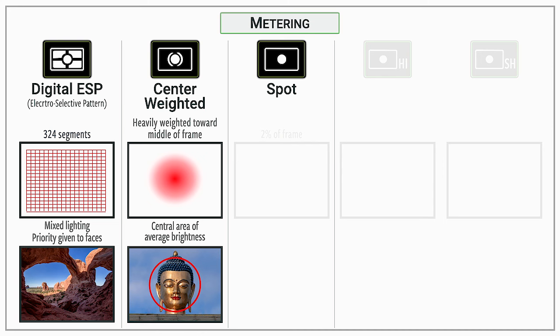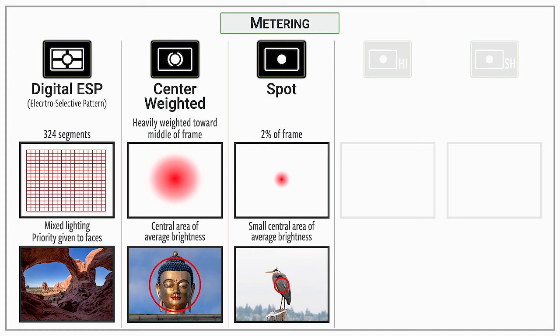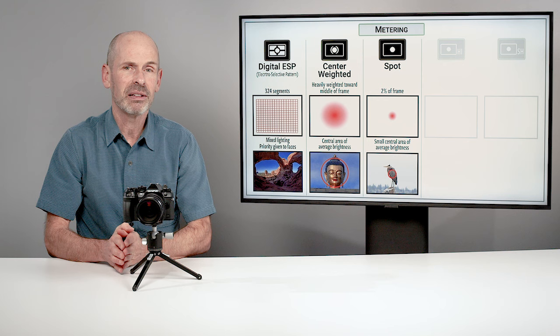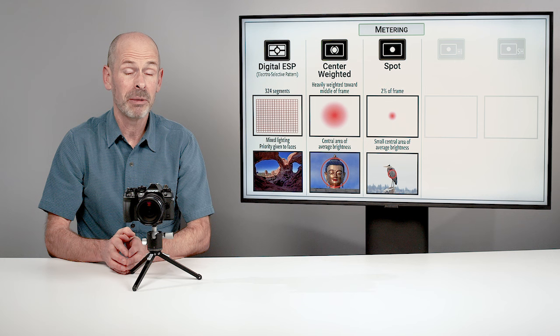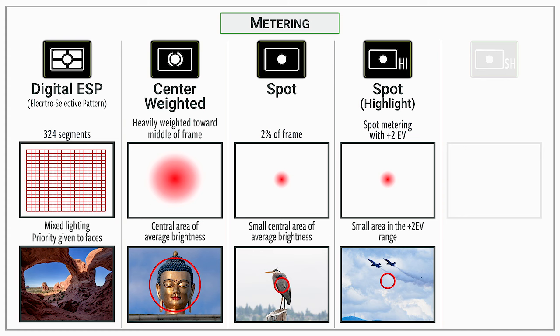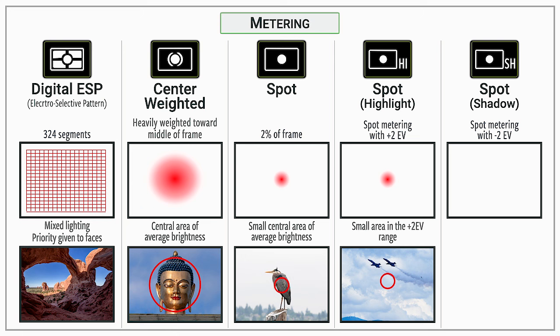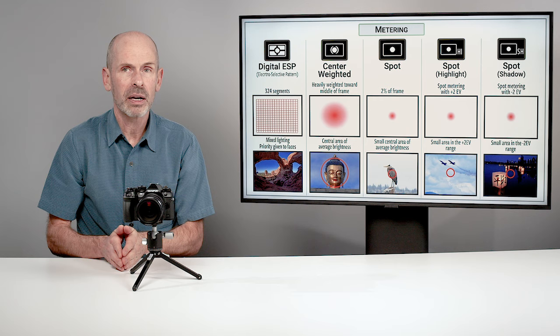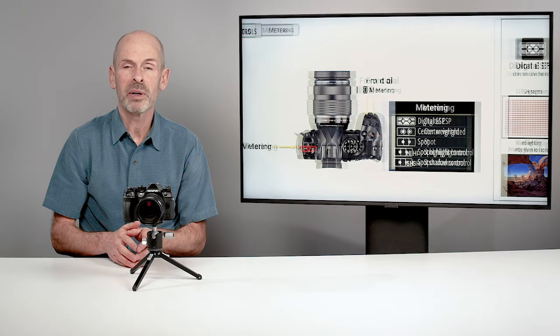Spot metering measures light in a very small area — just 2% of the frame. It's a very precise tool but also the most dangerous if accidentally left on, as it will throw off your exposures in many cases. There is also a highlight metering mode, which uses that spot area looking for brightness — it gets the correct exposure when what's in the spot is about two stops overexposed. There's also a spot shadow mode, looking for areas about two stops dark. These are very unusual metering patterns that most people won't use regularly.